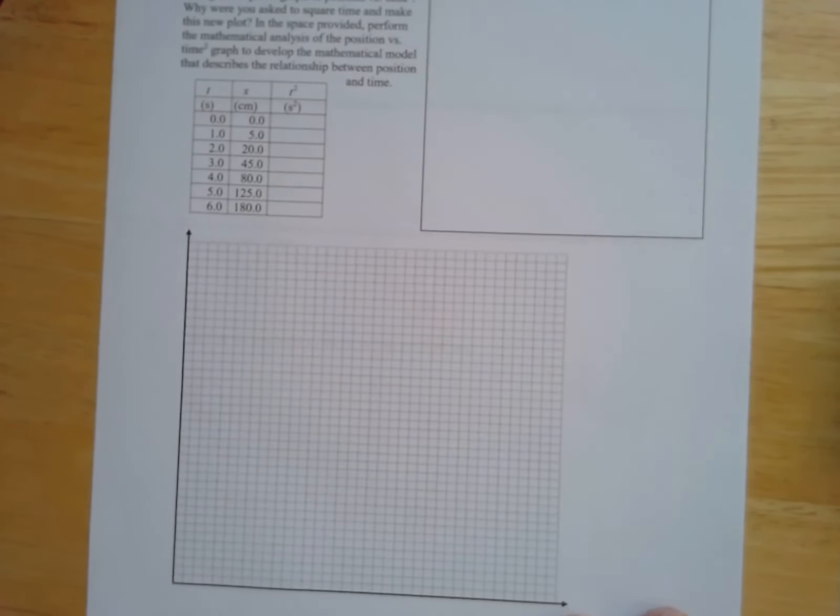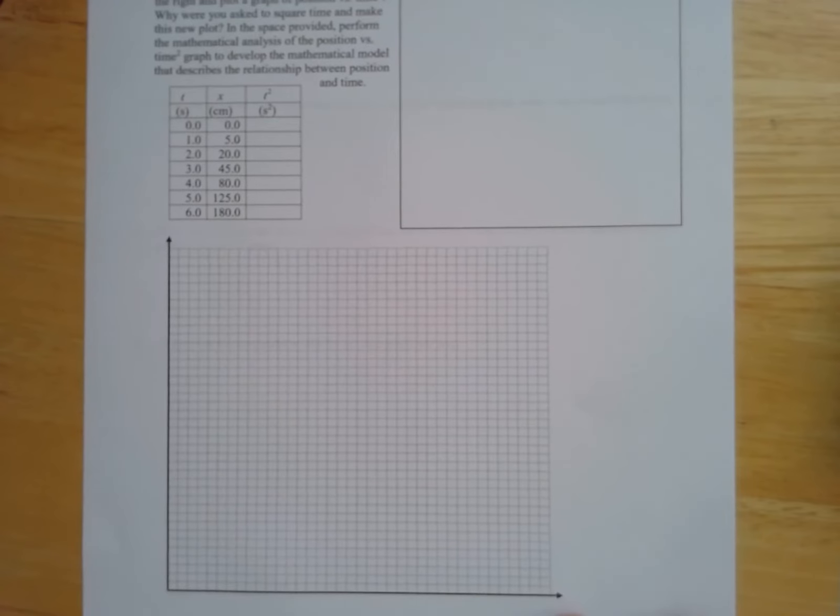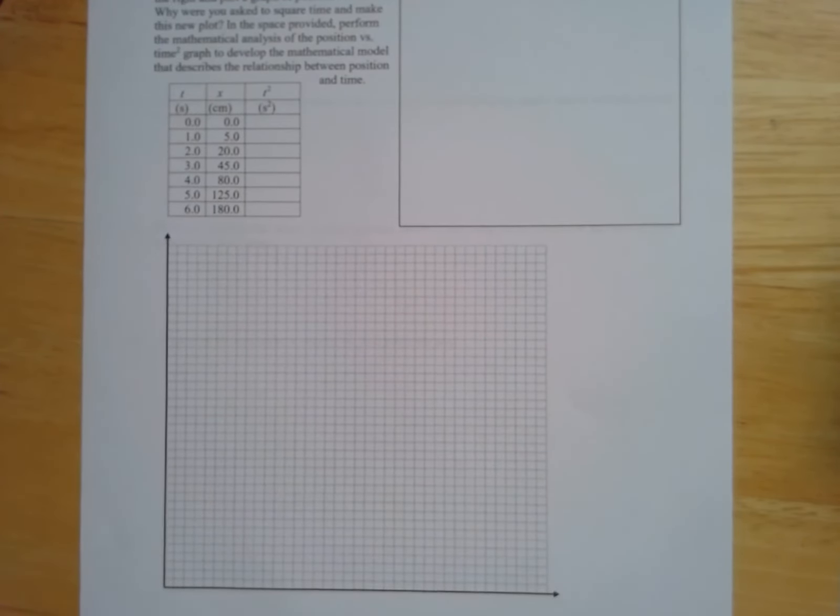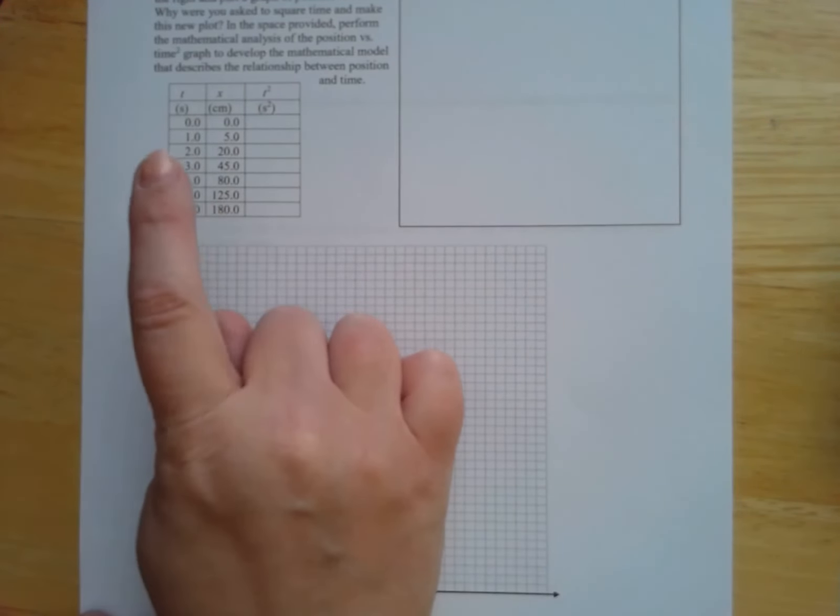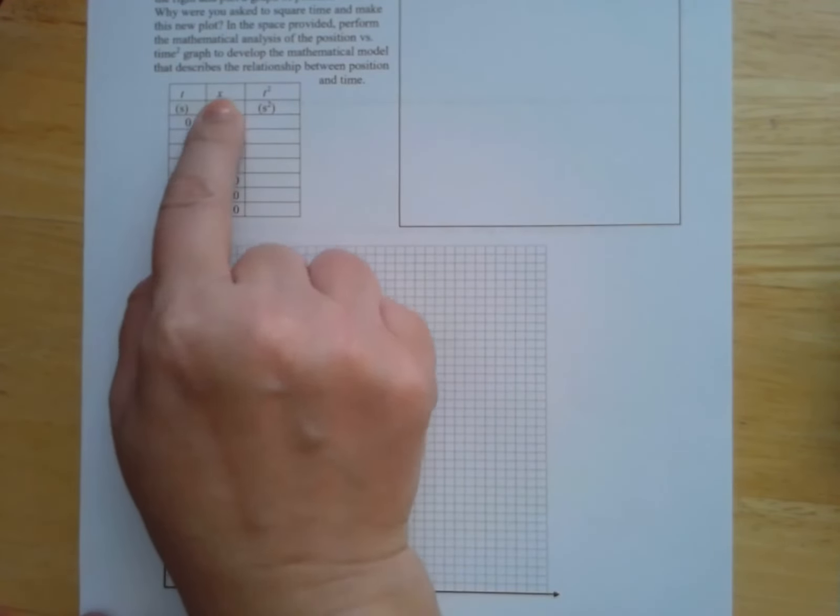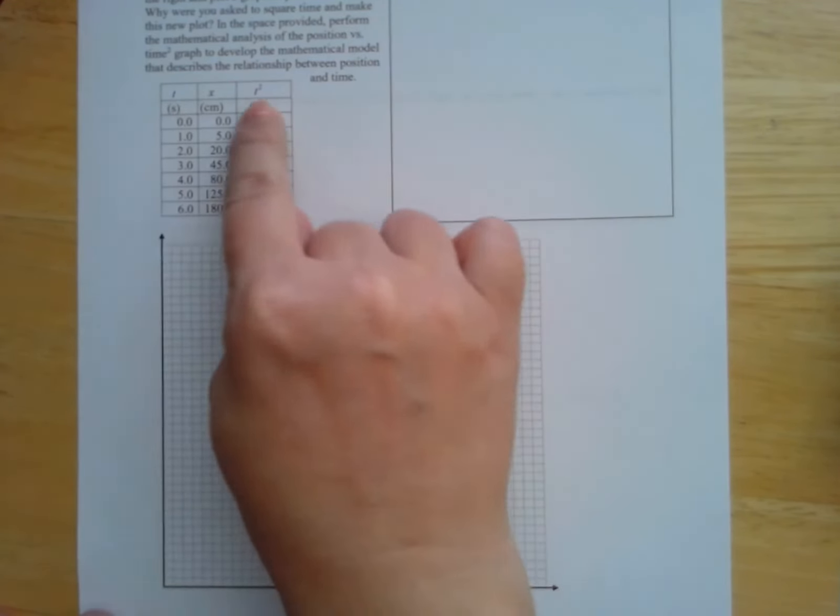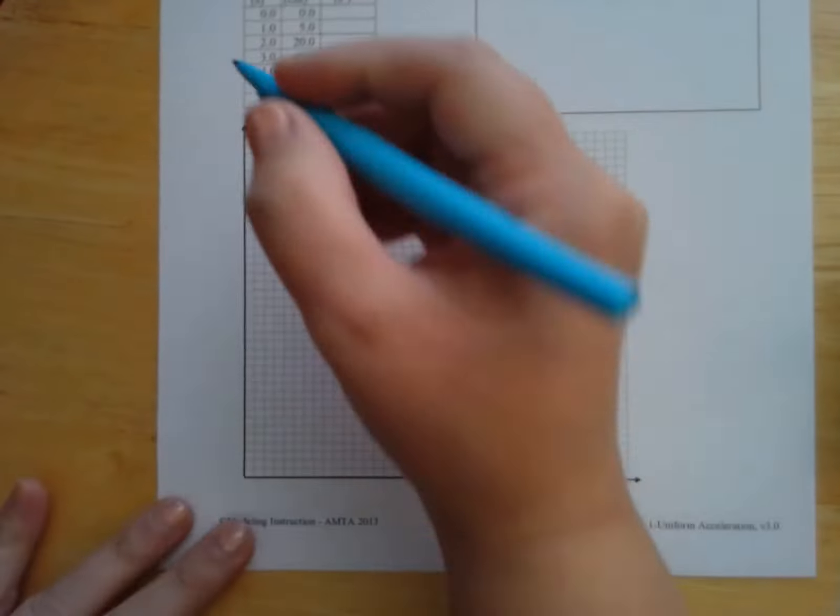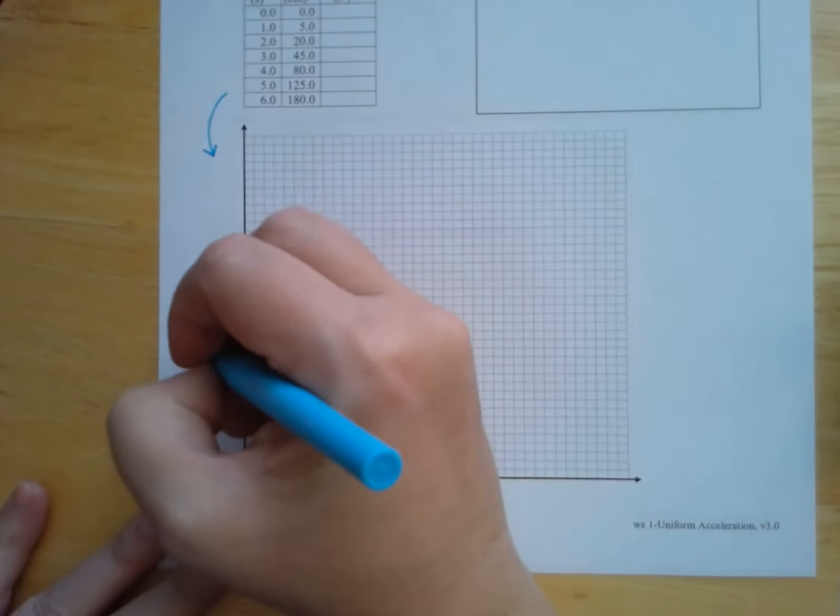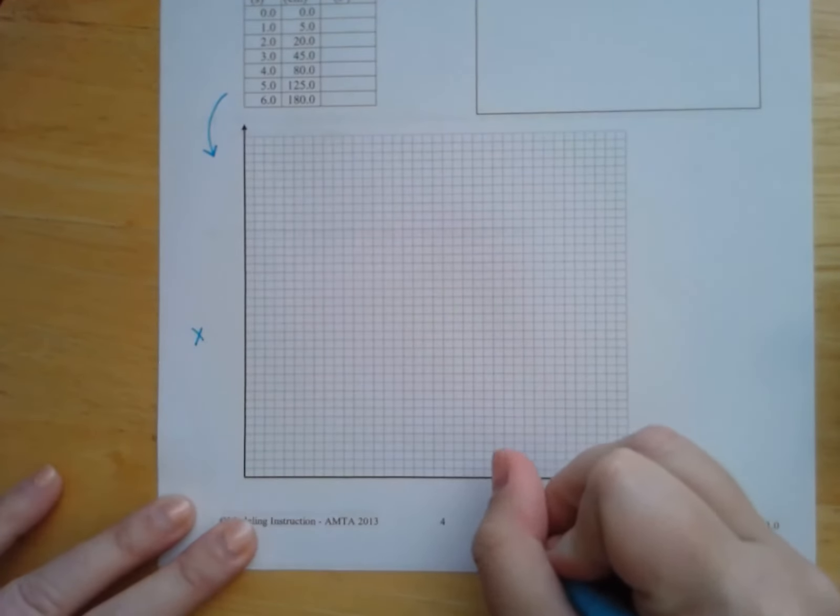After that, there's another thing you can do with the data. So this is all different ways to look at the same data. This is our same data table again, only for this one we're going to have time, position, and then we're going to do time squared. This is that linearization piece that you did in pivot interactives earlier this week.